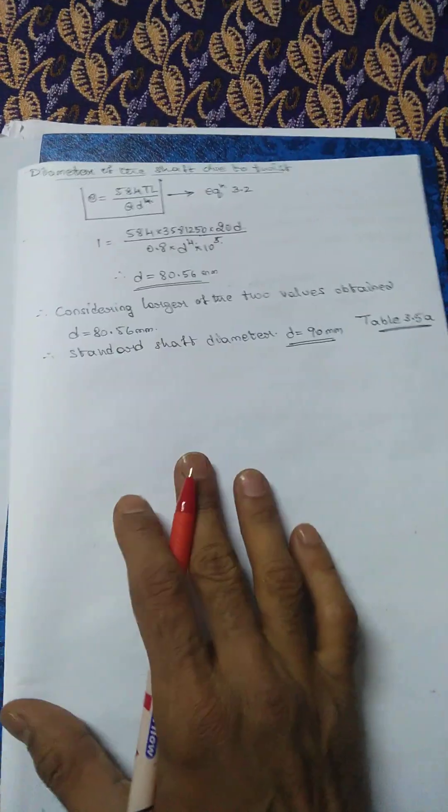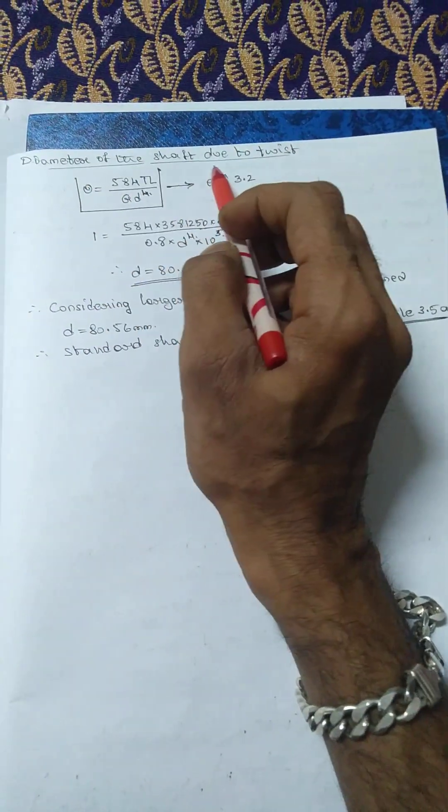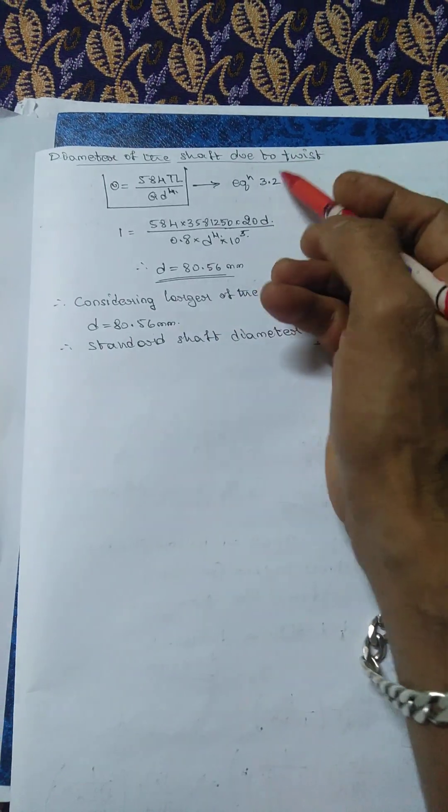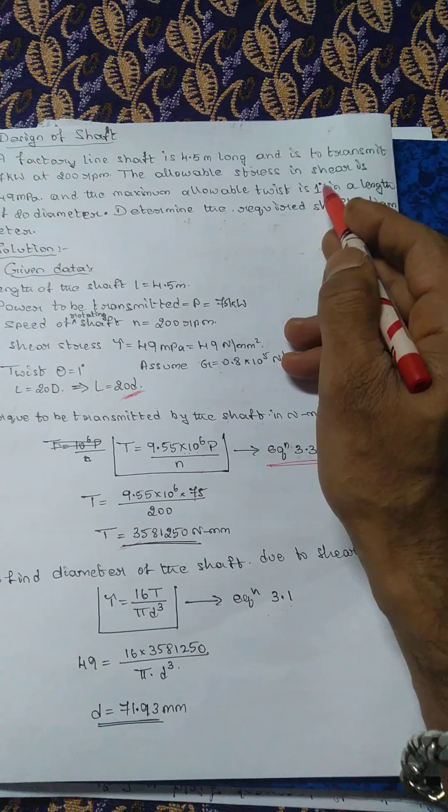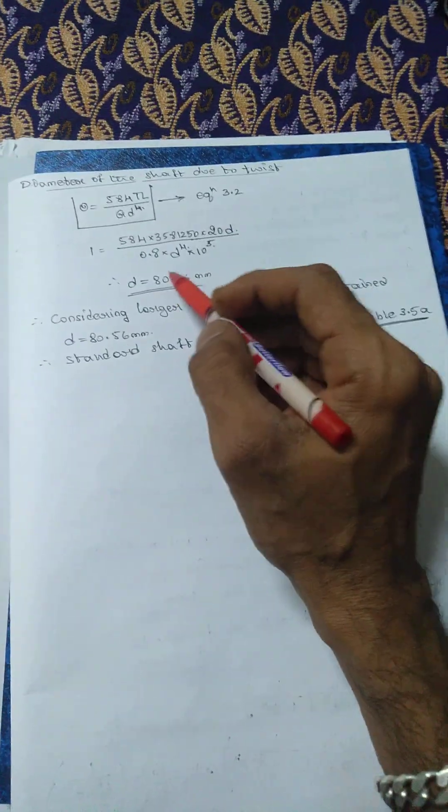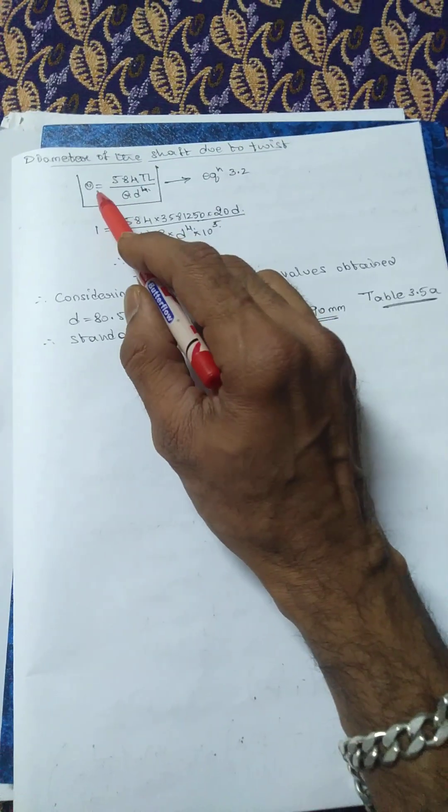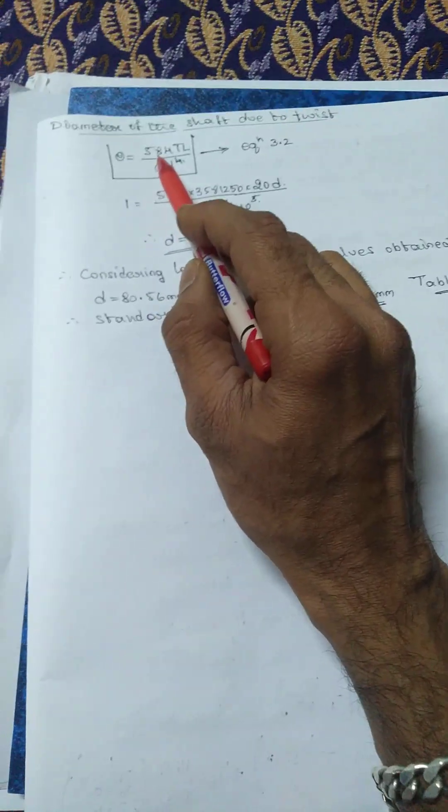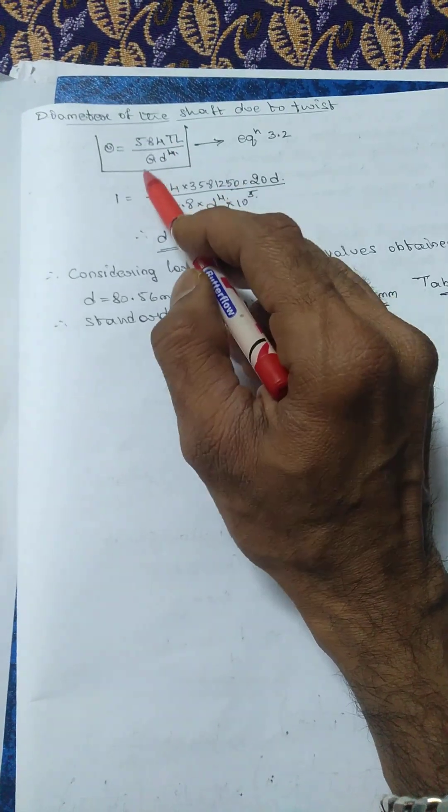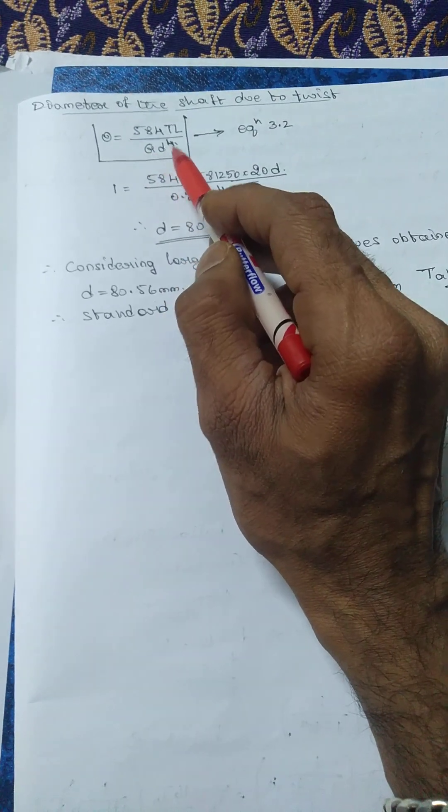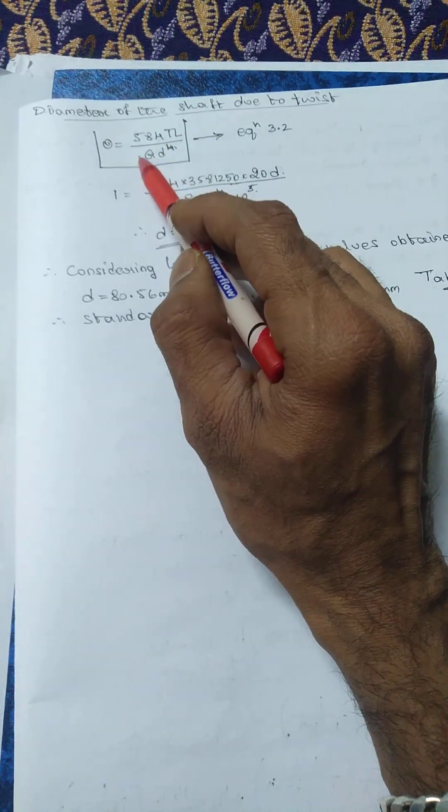Next, considering the diameter of the shaft due to twist, they have given one degree. Using this we have to calculate the diameter of the shaft. Theta equals 584TL divided by GD to the power 4, equation number 3.2 in the design data handbook.